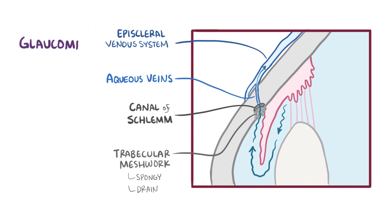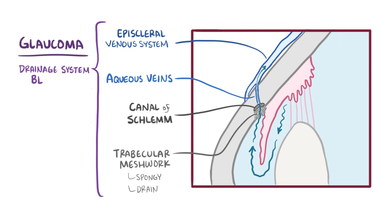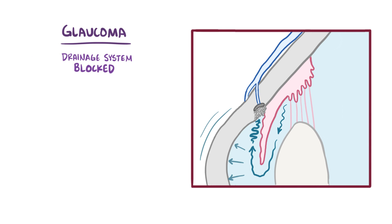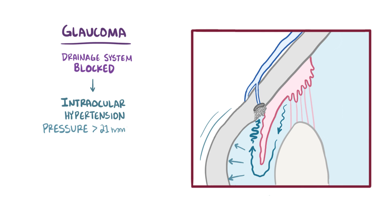In glaucoma, part of this aqueous humor drainage pathway becomes partially or completely blocked, so that fluid can't easily drain out. This causes the pressure within the fixed space of the anterior chamber to quickly build up, causing intraocular hypertension, which is defined as pressure greater than 21 millimeters of mercury, or 2.8 kilopascals.